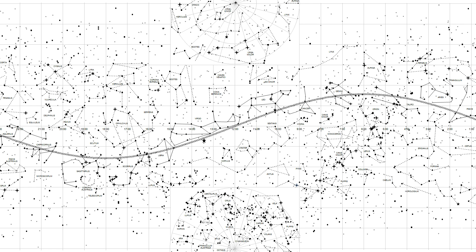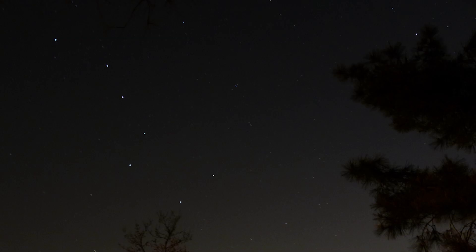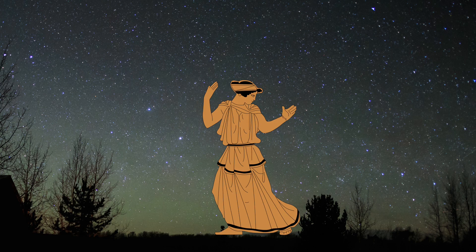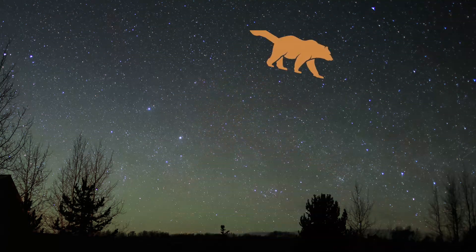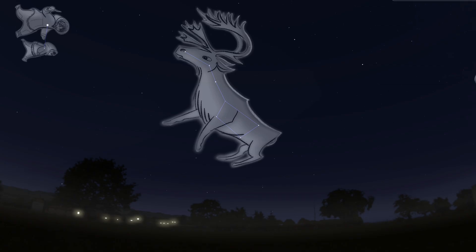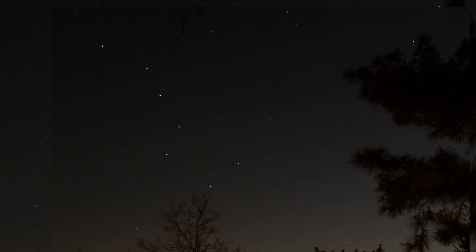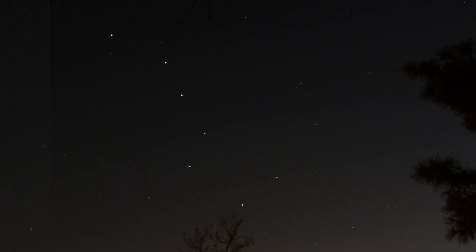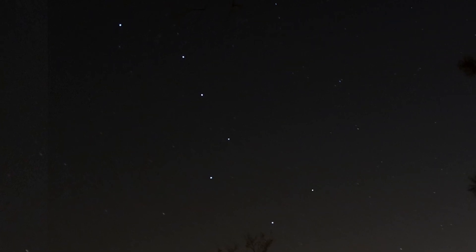So in summary, no one person created the constellations. Instead, ancient people from different places in the world had different ways of connecting the stars based on stories they wanted to tell. If you go outside tonight, you can imagine the stars of the Big Dipper as a giant spoon, a caribou, or even a frying pan. It's totally up to you.